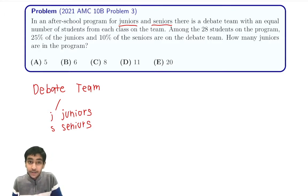On this subset of people on the debate team we're given that there's an equal number of juniors and seniors. We're calling it X juniors and X seniors. Among the 28 students in the program, 25% are juniors and 10% are on the debate team, so only a small portion.